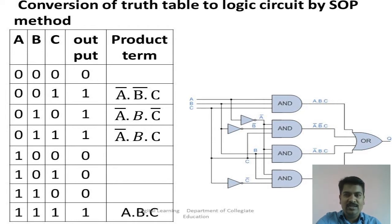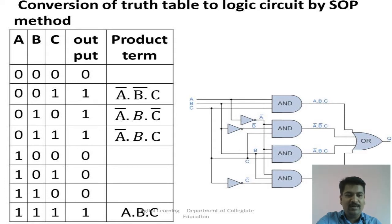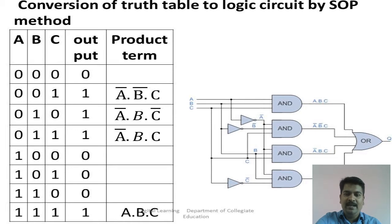For example, the combination 001 produces output 1. The min term for that is A-bar dot B-bar dot C. A-bar because A is 0 — if the variable is 0, write it in complemented form; if the variable is 1, write it in normal form. C is 1, so C is written as-is. Another output-1 combination is 010, giving min term A-bar dot B dot C-bar. Combination 011 gives A-bar B C. Another gives A dot B dot C.